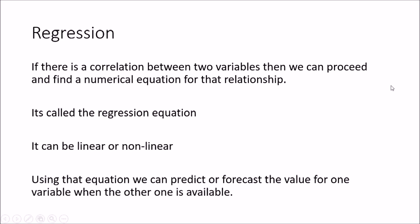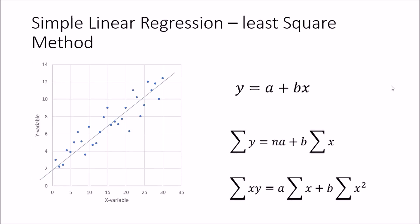Now we will look at how to use the least square method to find the regression between two variables. We have this scatter plot with X and Y variables, and these are the data points shown as blue dots.